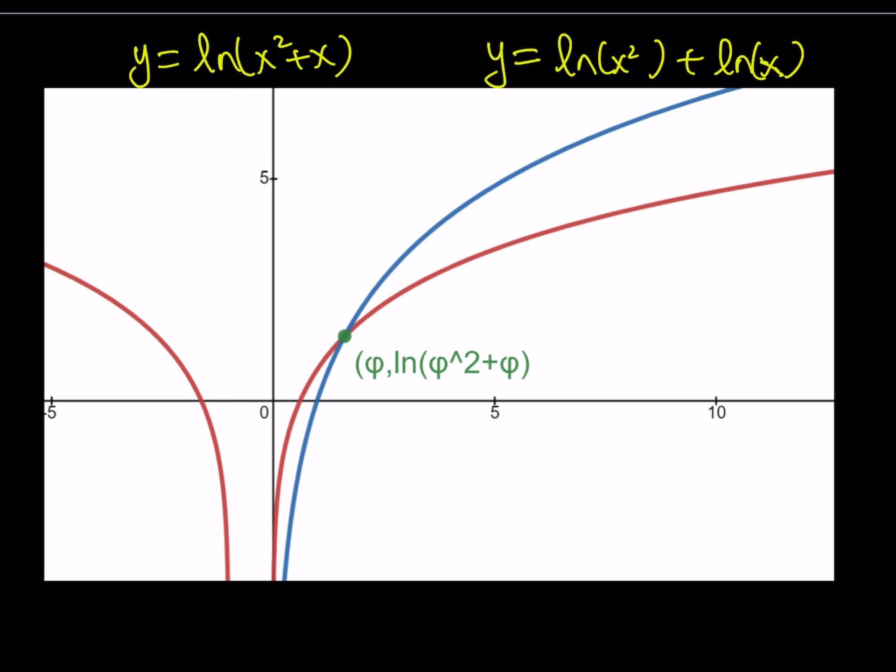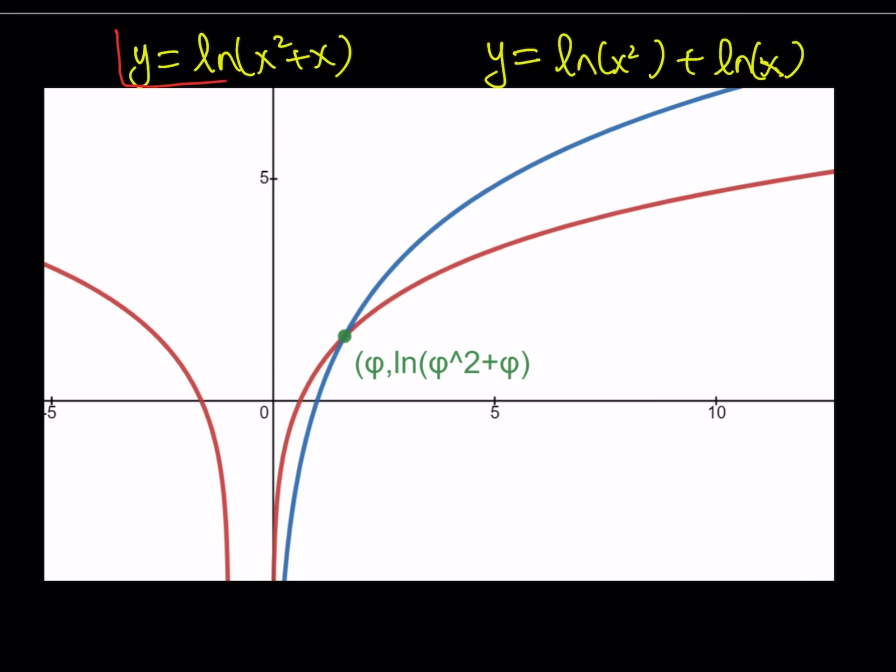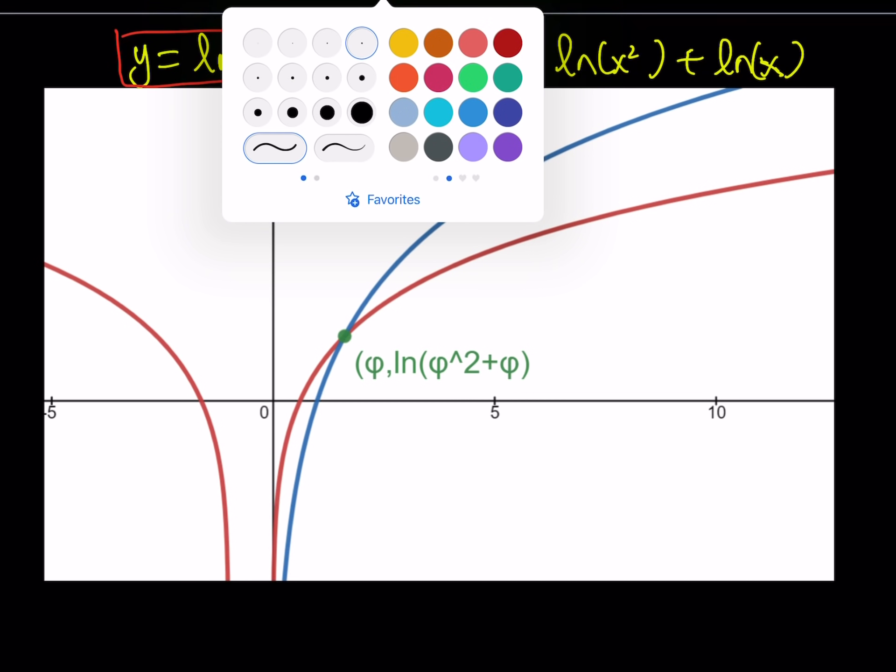But let's go ahead and take a look at the red graph first. The red one, let me use the red color to box it so we can distinguish. The red one is defined only when x squared plus x is greater than 0. So how is that possible?